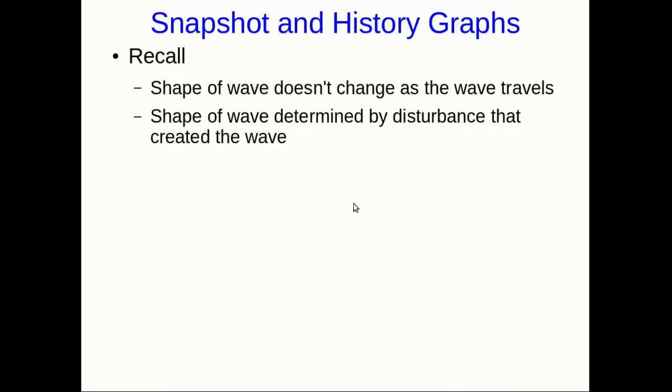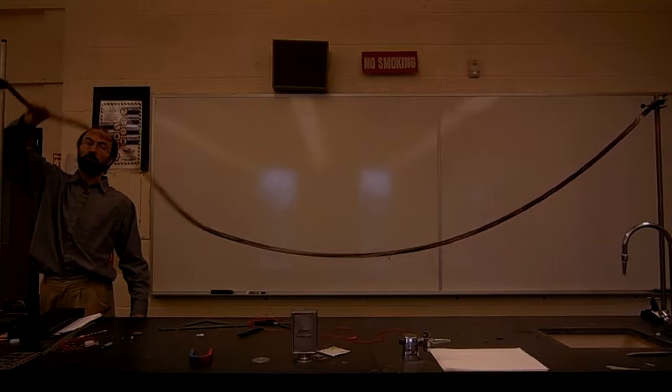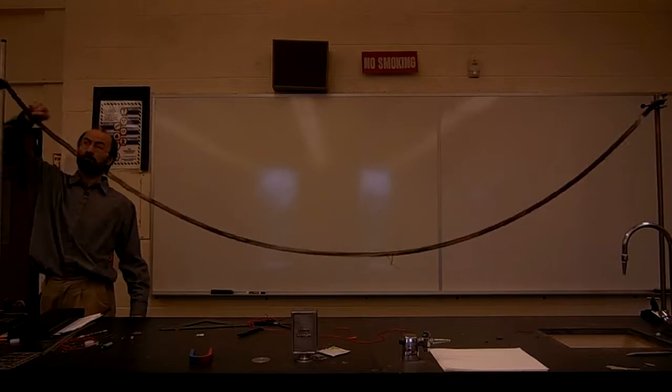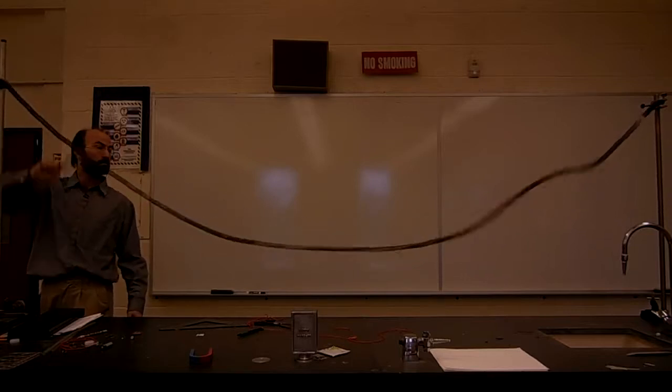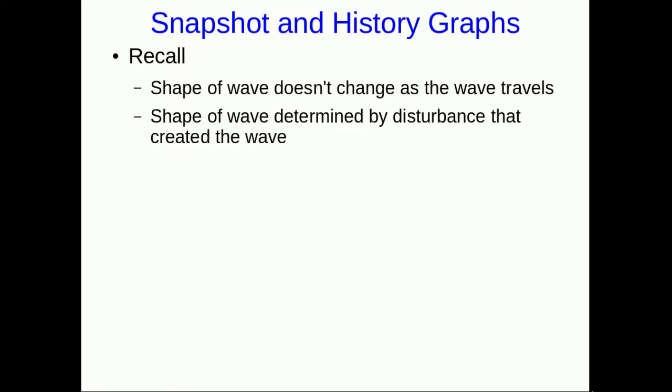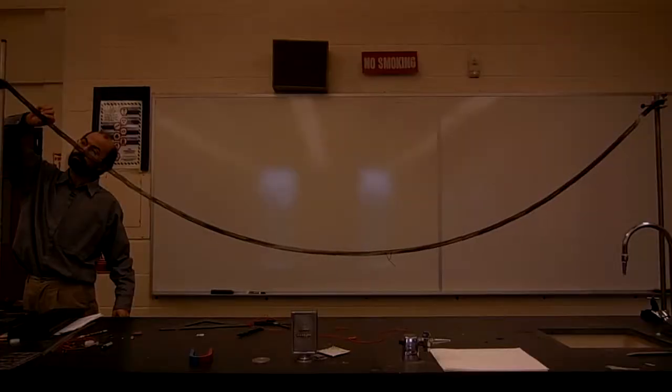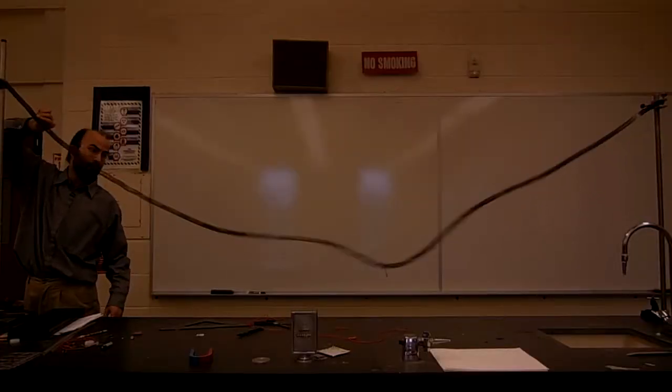Remember from last lecture that a wave as it's propagating through the medium doesn't change its shape, and that its shape is determined by the original disturbance. So with the long springs, you saw me wiggle the spring upward and it caused an upward bump to propagate along the spring. If I wiggled it downward, a downward trough would propagate along the spring.